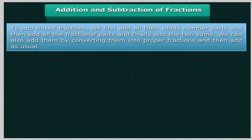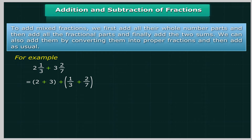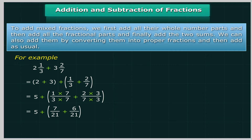To add mixed fractions, we first add all their whole number parts, then add all the fractional parts, and finally add the two sums. For example, 2⅓ plus 3²⁄₇ equals 5 plus (7 upon 21 plus 6 upon 21), which equals 5 plus 13 upon 21, which equals 5 and 13 upon 21.